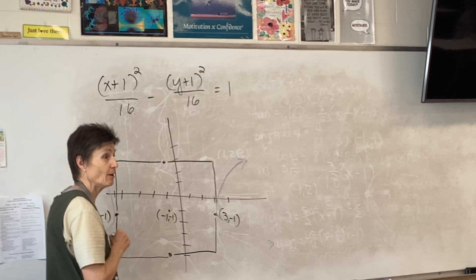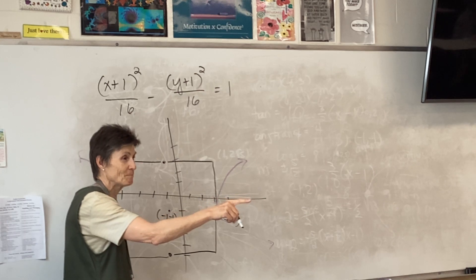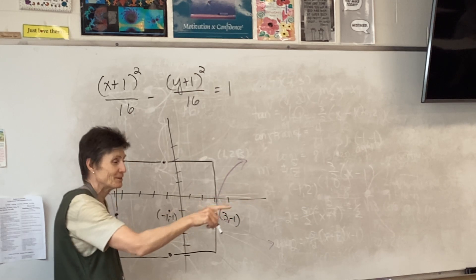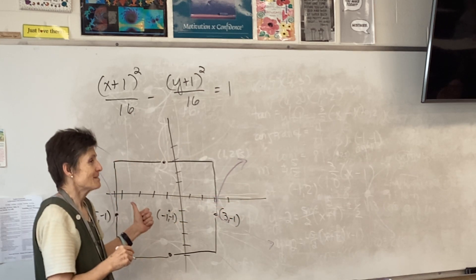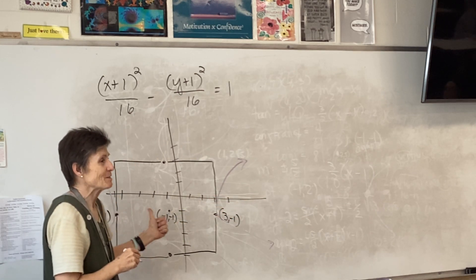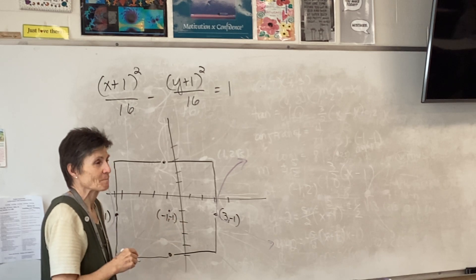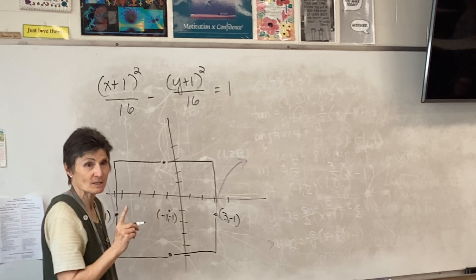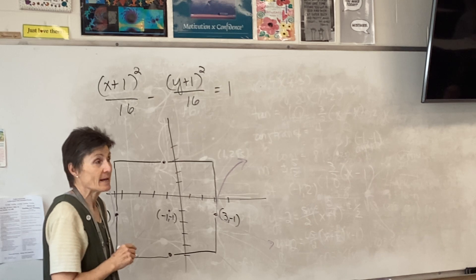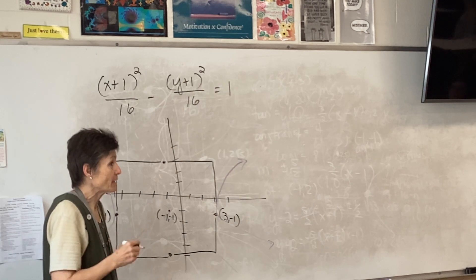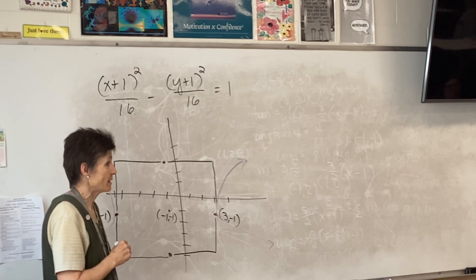Transverse axis — how long? Eight. And the conjugate axis? It's also eight. This is my transverse axis running across here. How far is it from the center to the focus? The square root of 32, which is 4 root 2. How did he get 32? He added the denominators.